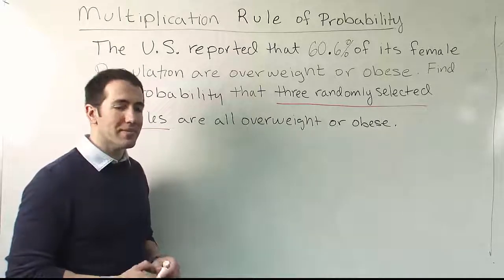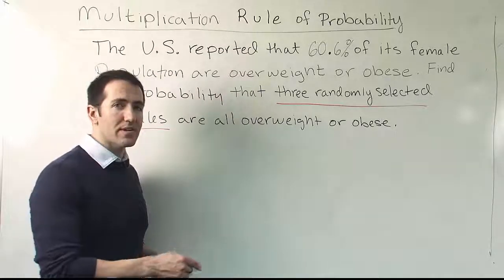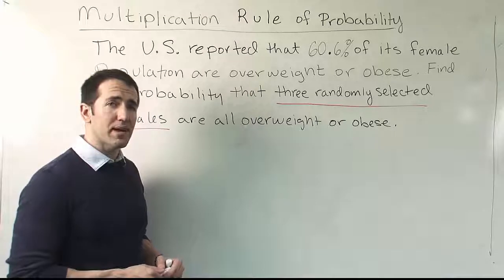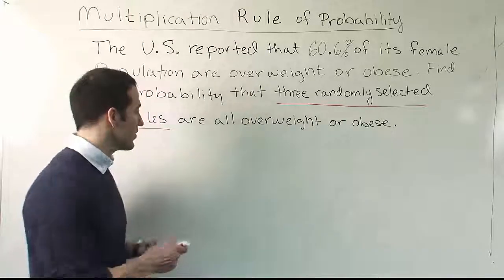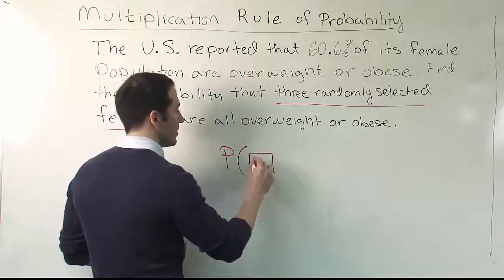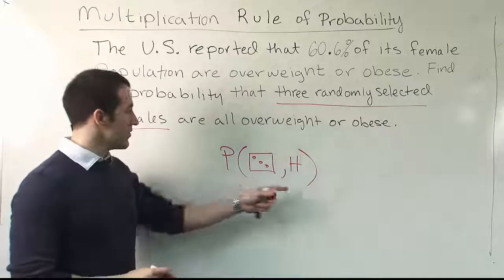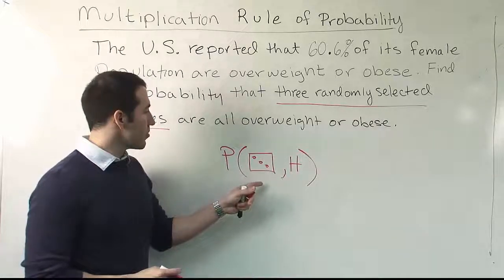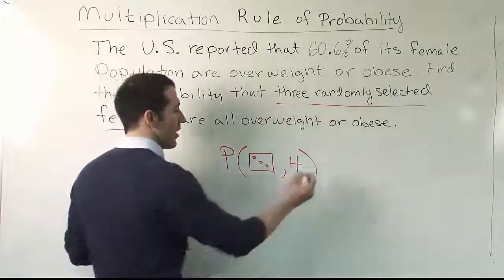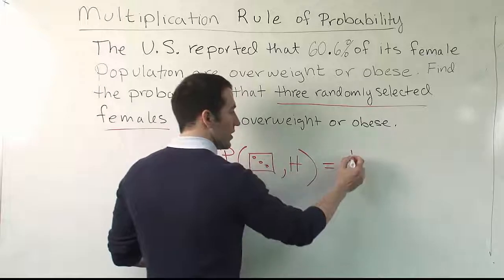A classic example would be flipping a coin and rolling a die. If I roll a six-sided die and I'm looking for the probability that it turns out to be a three, and then I flip a coin looking for the probability that it turns out to be heads, and I want to figure out the probability of that joint event — the probability of getting a three and a heads — I just multiply the probability of a three on the die times the probability of heads on the coin.